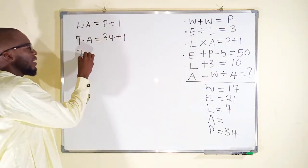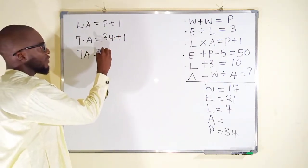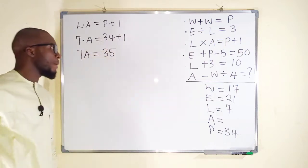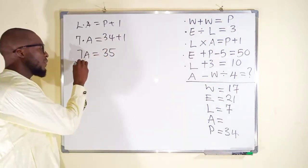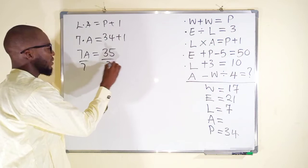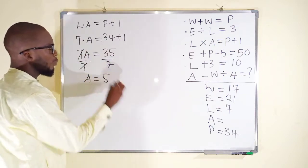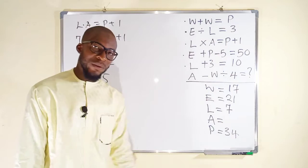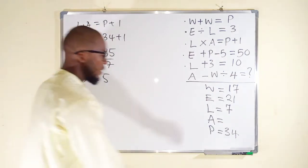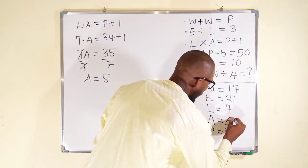Plus 1. To the right, 7A here. To the right, we have 35. Divide both sides by 7. Finally, A is equal to 5, because 35 divided by 7 is equal to 5. A is equal to 5.